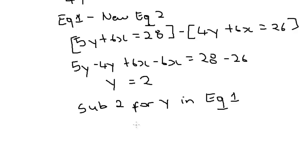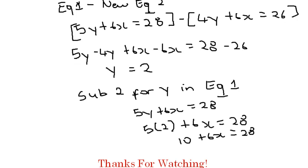Equation 1 is 5y plus 6x equals 28. We're substituting 2 for y, so where we have y we're going to put 2. So that is 5 times 2 plus 6x equals 28. 5 times 2 is 10, plus 6x equals 28.